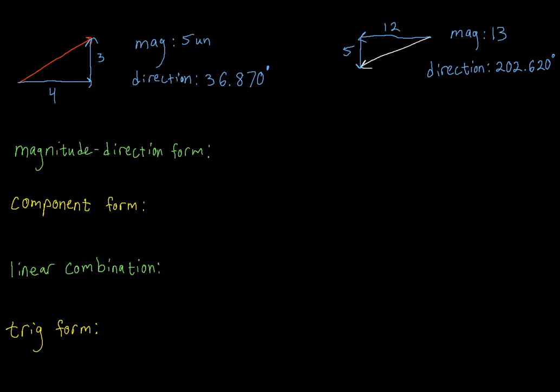As you can see, there's a lot of stuff on the board right now. Before we get into the meat and potatoes of what's going on, let me real quick explain what's on the board. I've gone ahead and drawn two vectors — this red vector here, and this white vector over here.